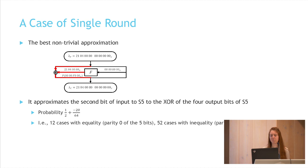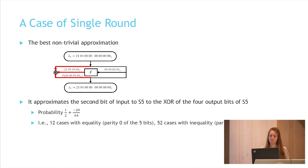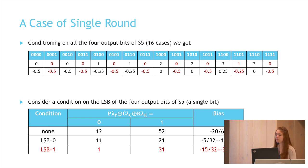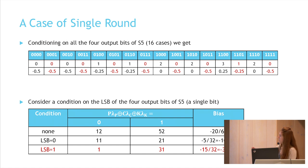Starting with a single-round example with a single active S-box: this is the best non-trivial linear approximation of S5, with bias of 12/64. In the single-round case, we can compute the output of the f-function from the plaintext and ciphertext. In a table calculating the bias conditioned on all four output bits of S5, an important and unexpected observation is that only one of the 12 parity-zero cases satisfies LSB equal to 1, while the other 11 satisfy LSB equal to 0. Without any condition: 12 cases have parity 0 and 52 have parity 1.